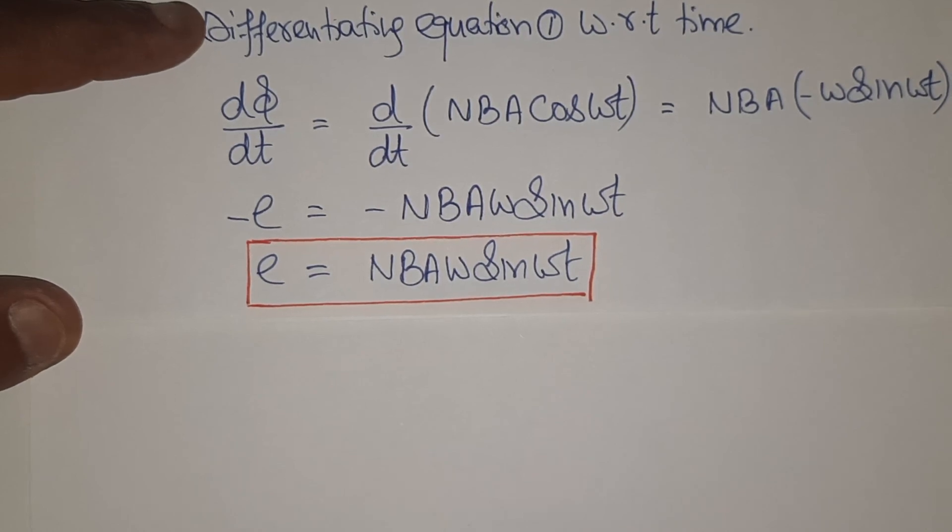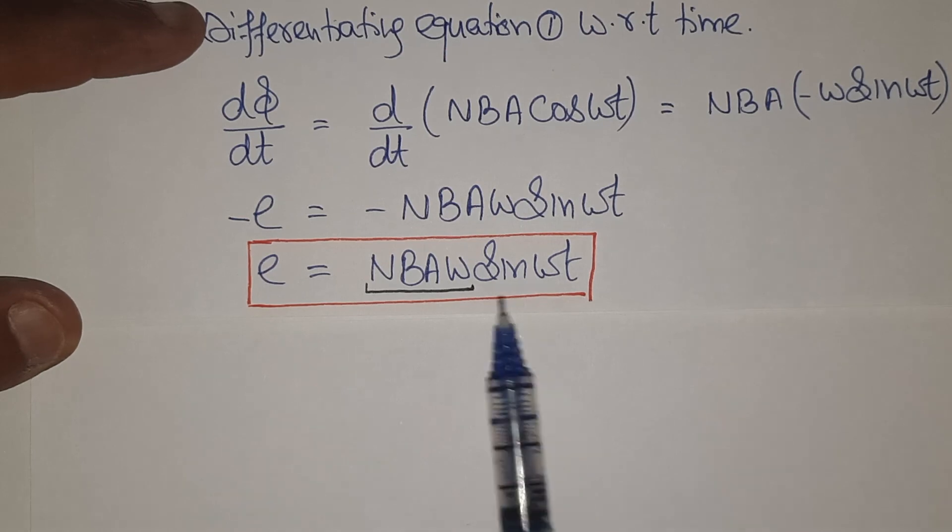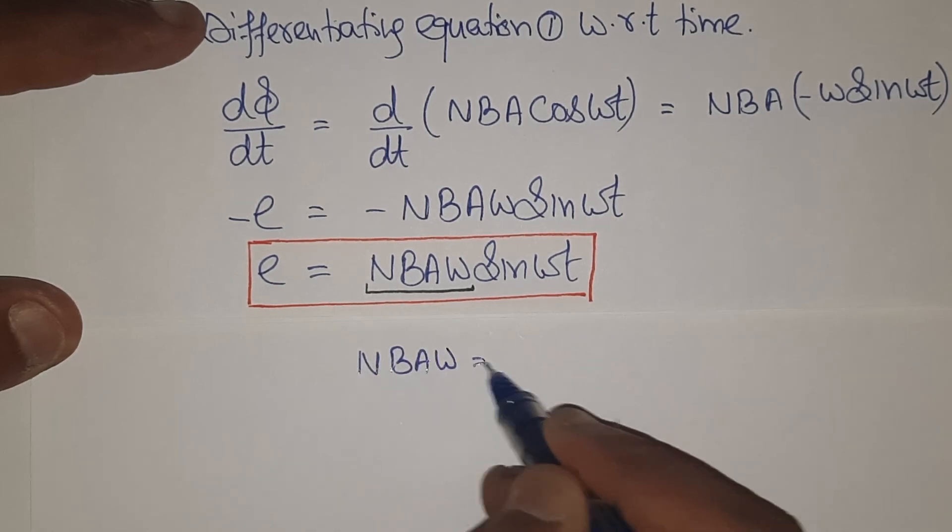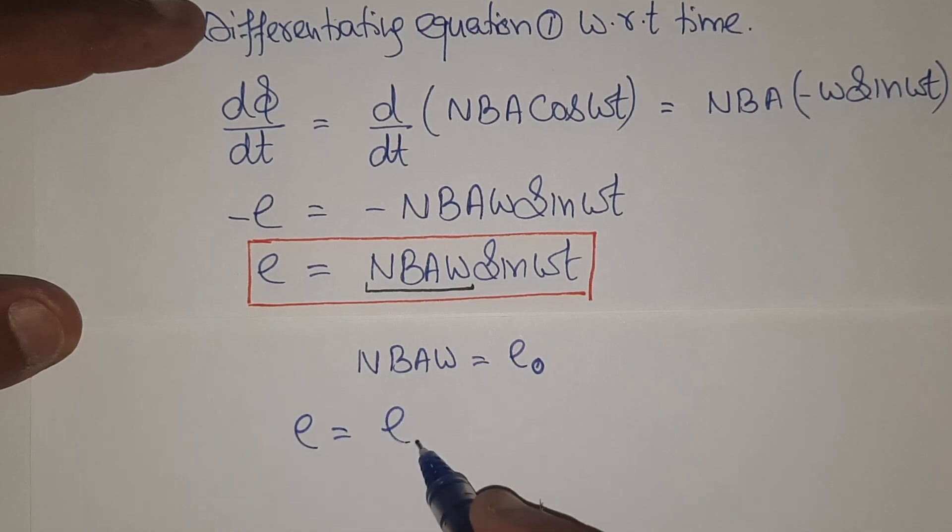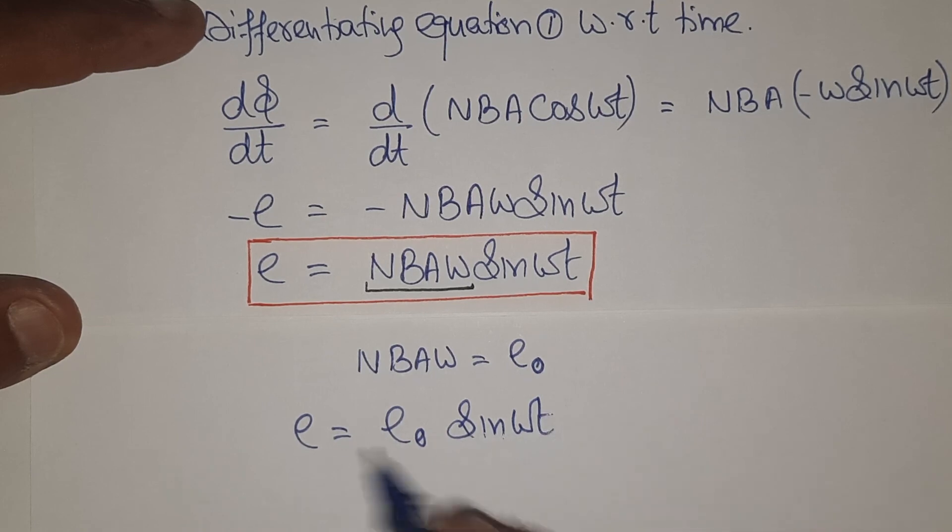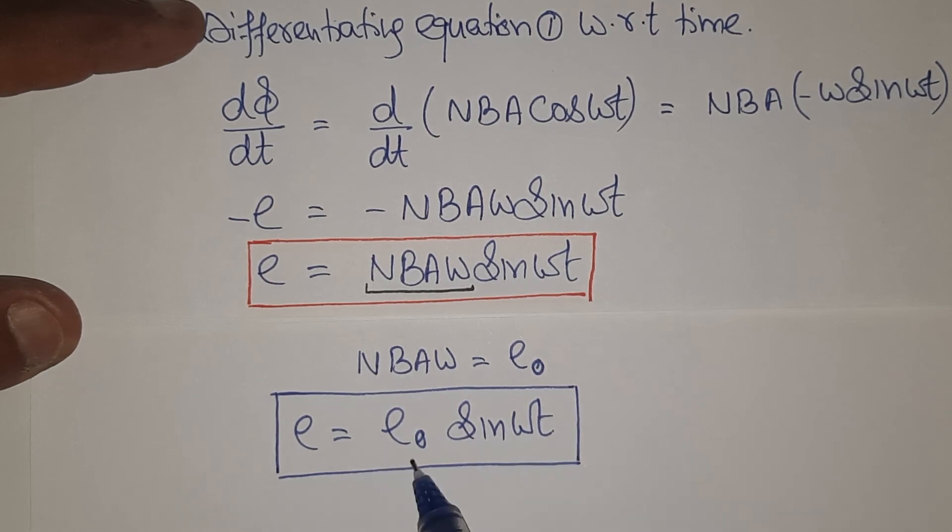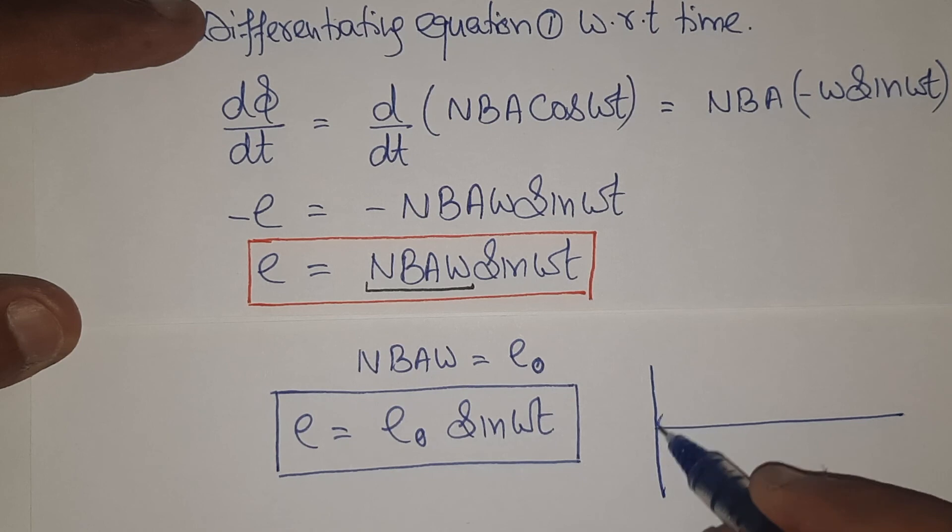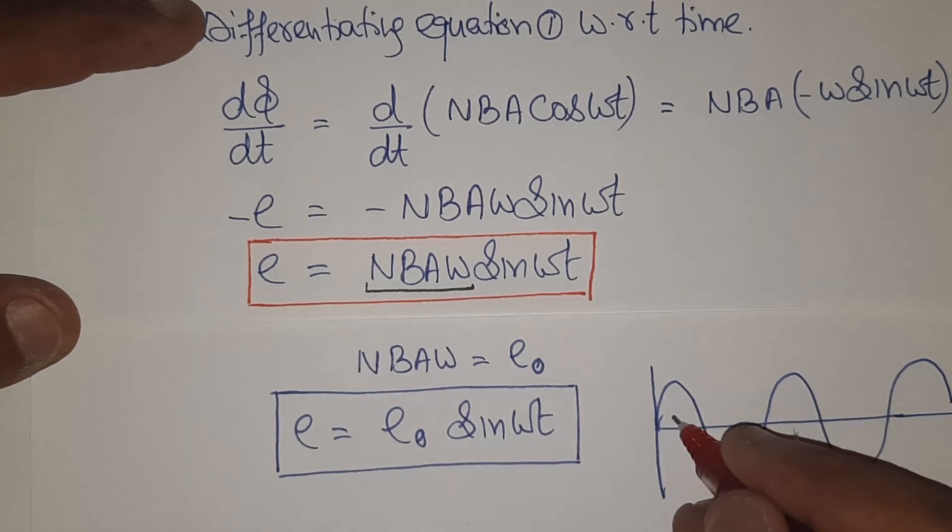Now if you concentrate in this particular equation, this is having basically two parts. One is N, B, A, omega - these all are constant terms. And this is the variation term, sin of omega t. So this NBA omega product defines the peak value of EMF, E naught. And finally we are getting E is equal to E naught sine of omega t. The induced EMF is a sinusoidal wave, is a sine wave with peak value E naught. The wave is of this type with peak value E naught, the wave is a sine wave.